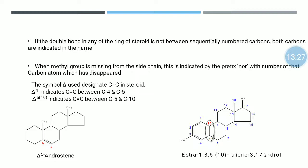So delta-5 in the present example indicates that the double bond originates from carbon number 5 and goes sequentially up to 6. The structure shown is delta-5 androstene. Now, what happens when the double bond is not in a sequential manner? For example, in estra-1,3,5(10)-triene-3,17-beta-diol, the double bond between 5 and 10 is not in sequence.